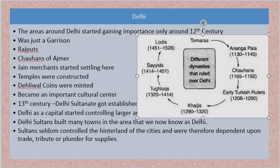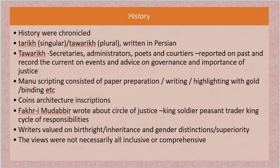We are talking about history around the 12th century — the medieval history. History was chronicled in those days because by the 1100s and 1200s people started recording. There was paper; manuscripts didn't need to be washed. People could create more paper, write on it, and paper had more life. Literacy was there, scribes were willing to copy and keep records. Though some scribes added a word or sentence here and there, still records exist. One way we get records is through Tariq or Tawarik.